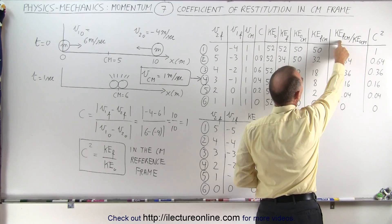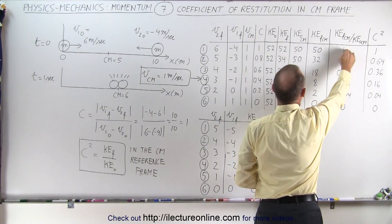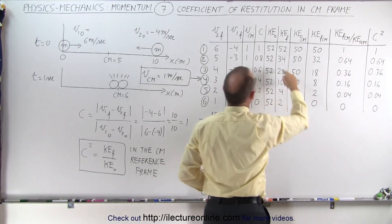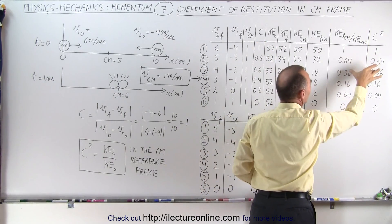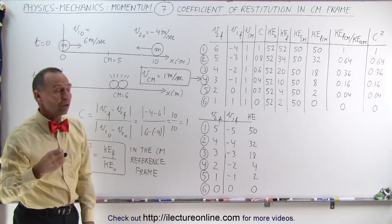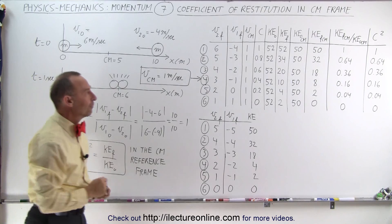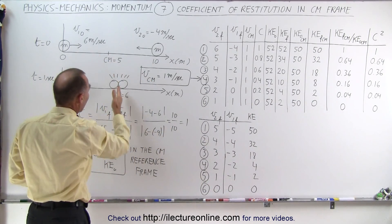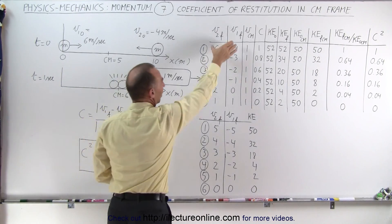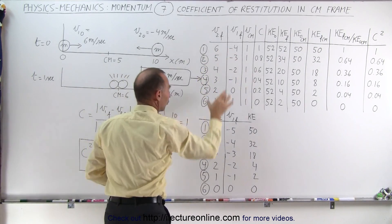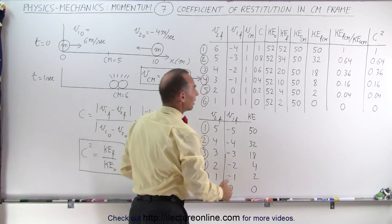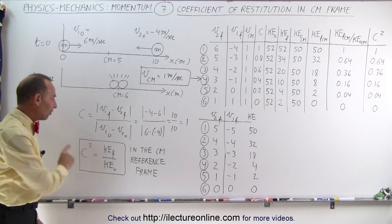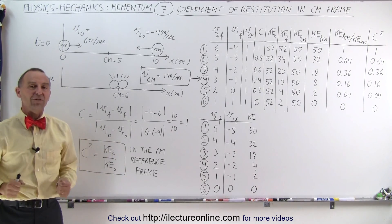The ratio of final to initial kinetic energy in the CM reference frame is: 1, 0.64, 0.36, 0.16, 0.04, and 0. Notice how this perfectly lines up with the coefficient of restitution squared — those numbers are exactly the same. C² is exactly equal to the ratio of final to initial kinetic energy in the center of mass frame. So we take the actual velocities relative to a fixed earth, convert them to velocities relative to the center of mass, calculate kinetic energies, and take the ratio — and that ratio equals C² squared. That's what the coefficient of restitution actually stands for.